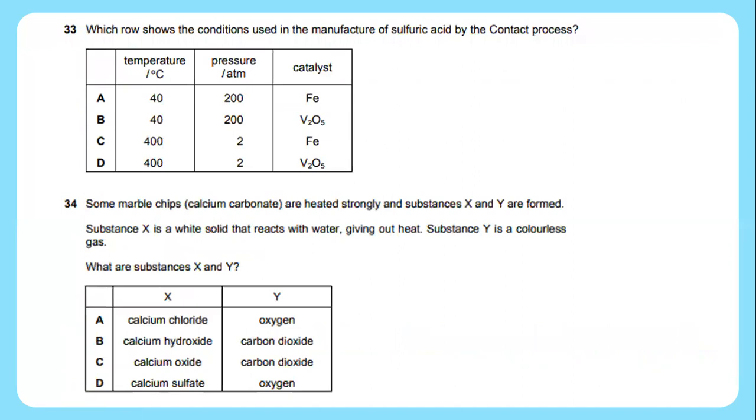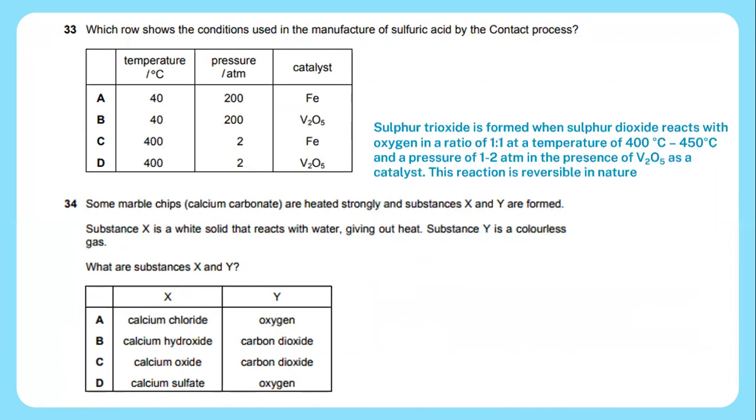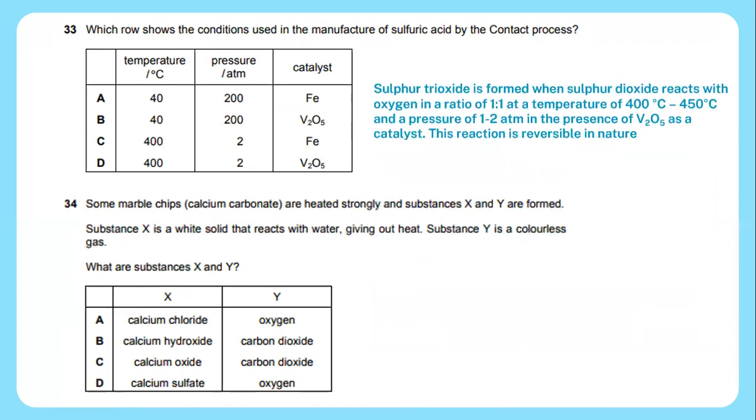Question 33: Which row shows the conditions used in the manufacture of sulfuric acid by the contact process? Sulfur trioxide is formed when sulfur dioxide reacts with oxygen in a ratio of 1 to 1 at a temperature of 400 to 450 Celsius and a pressure of 1 to 2 atm in the presence of V2O5 as a catalyst. This reaction is reversible in nature. The answer is D.